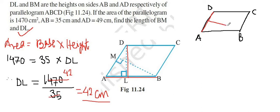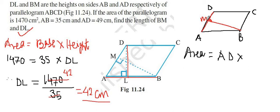This length BM will definitely be the perpendicular height. AD is the base and BM is the perpendicular height. Applying the same formula for the area of the parallelogram: area = base × perpendicular distance = AD × BM.